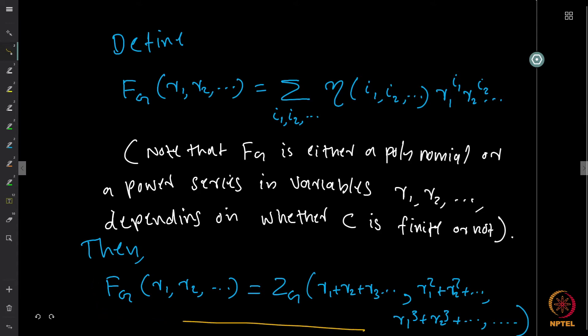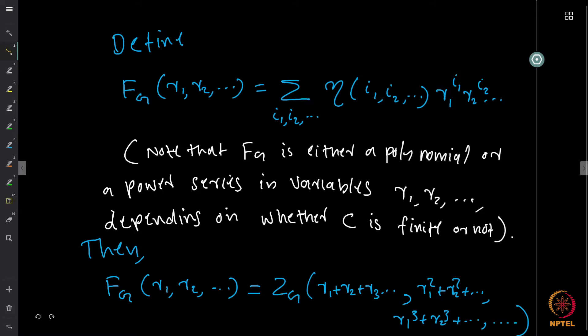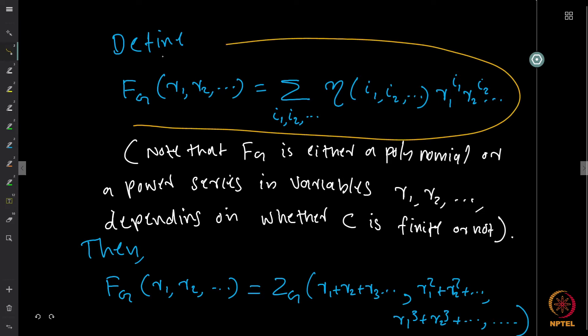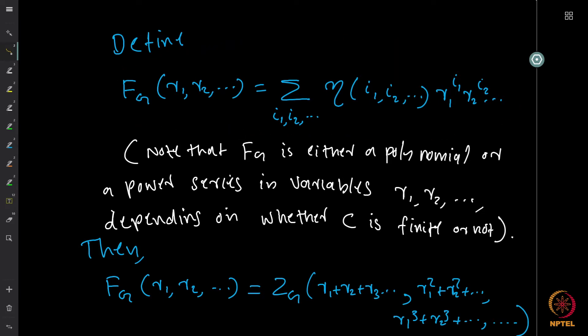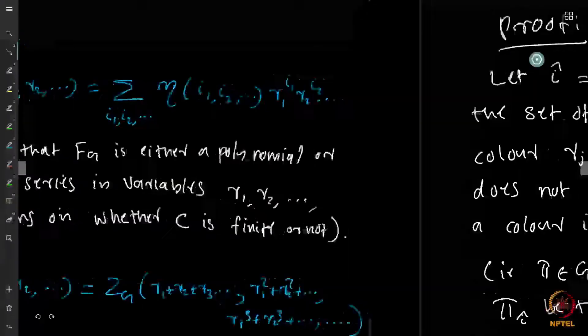Pólya's theorem states that f_G(r₁, r₂, ...) equals the cycle index Z_G evaluated by substituting each variable zᵢ with Σⱼ rⱼⁱ. So Z_G is evaluated at (r₁ + r₂ + ..., r₁² + r₂² + ..., r₁³ + r₂³ + ..., ...). This gives a direct relation between the cycle index of the group and the count of inequivalent colorings with fixed color frequencies.